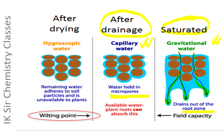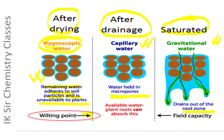At the permanent wilting point, the soil is almost dry and the remaining water adheres to the soil particles very strongly, so it cannot be assimilated by plants and hence is unavailable to them. The water held in soil at the permanent wilting point is called hygroscopic water. If the soil is dried completely and exposed to moist air, this amount of water is absorbed from the air, hence it is also called hygroscopic water.